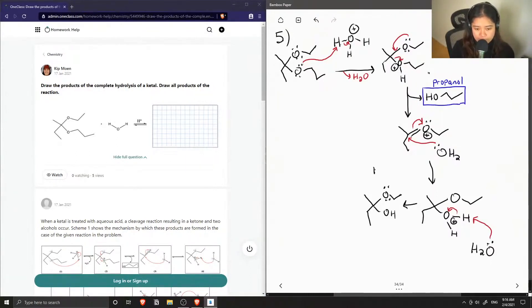So now, the lone pairs on this oxygen, so now it's a similar mechanism to how we started. This will come in and take one of the hydrogens from a hydronium ion and have a positive charge now.